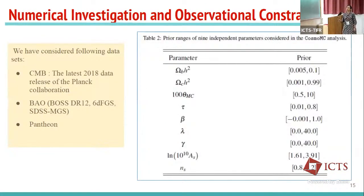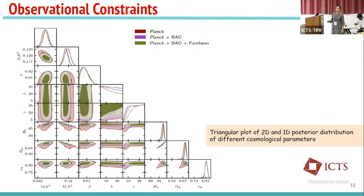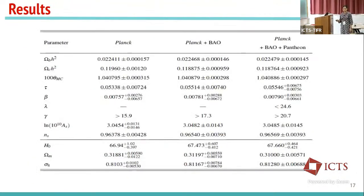We have also performed observational constraints on the various model parameters using CMB, BAO, and the Pantheon dataset. The results show the one-sigma and two-sigma posterior distributions for different cosmological parameters. Focusing on the value of beta: beta = 0 implies no interaction. The beta = 0 value lies beyond the two-sigma contour, meaning the data actually prefers a non-zero interaction model, at least at the one-sigma level.